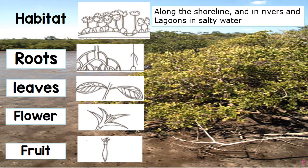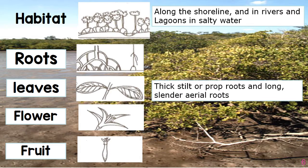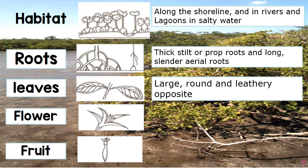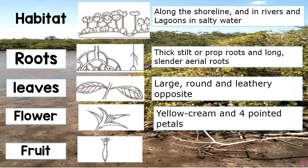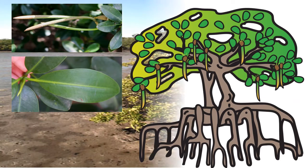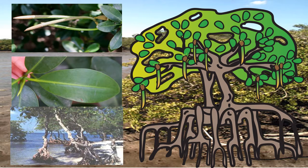Mangrove habitat. The mangrove habitat is along the shoreline and in rivers and lagoons in salty water. The roots of the red mangroves are thick stilts or prop roots and long slender aerial roots. The leaves are large, round and leathery, and they are opposite. The flower is a yellow cream color with four pointed petals. The fruit forms a torpedo-like plantlet on the tree. Here we have the fruit, the leaf, and the root.